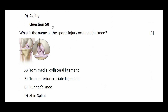Question number fifty: what is the name of the sports injury that occurs at the knee? Options: torn medial collateral ligament, torn anterior cruciate ligament, runner's knee, shin splint. The answer is torn anterior cruciate ligament.